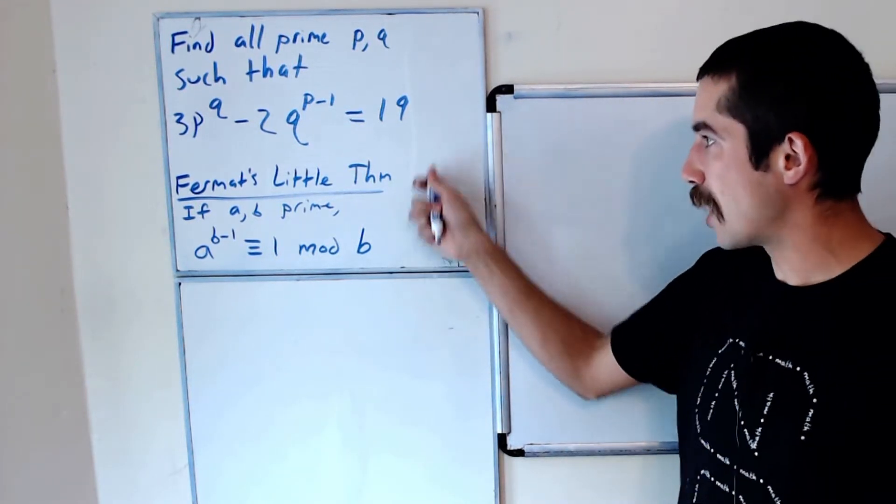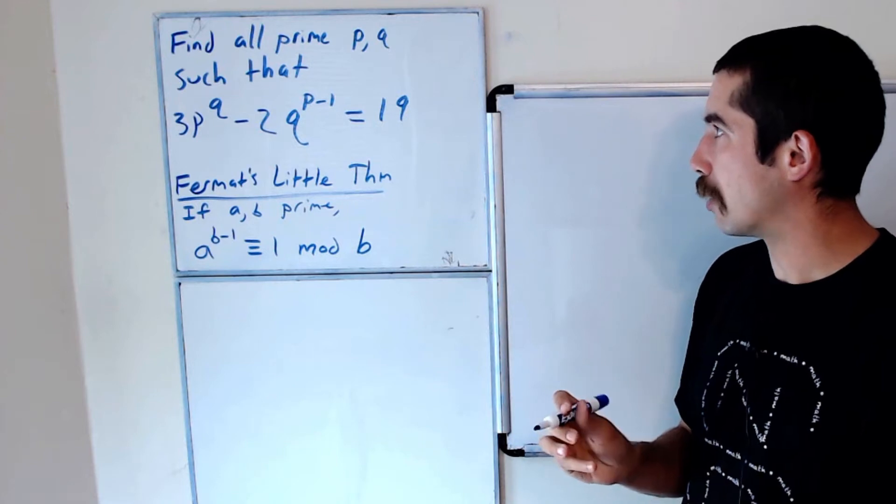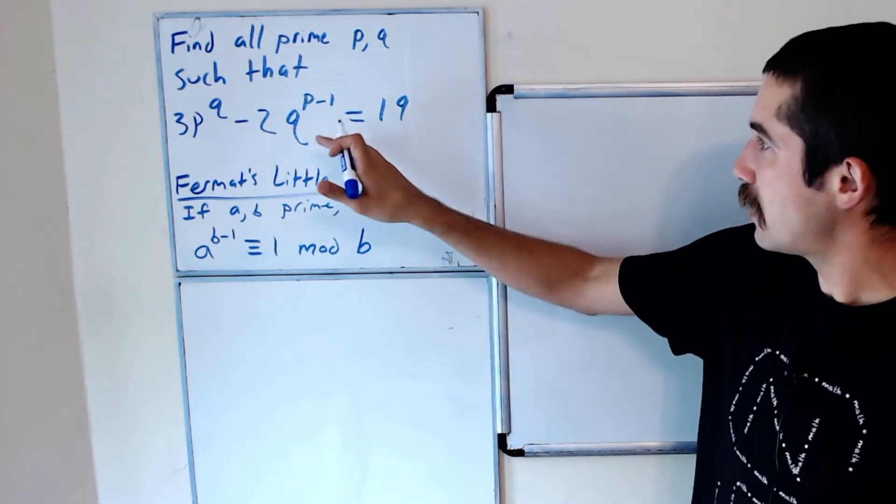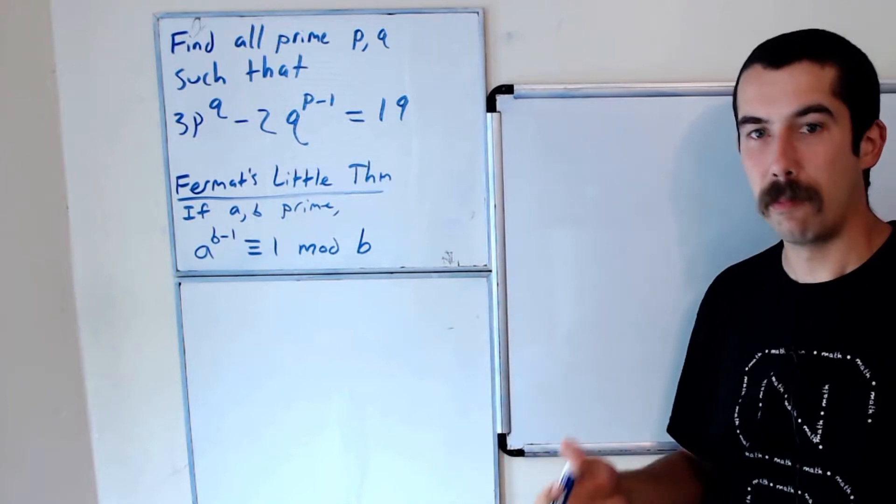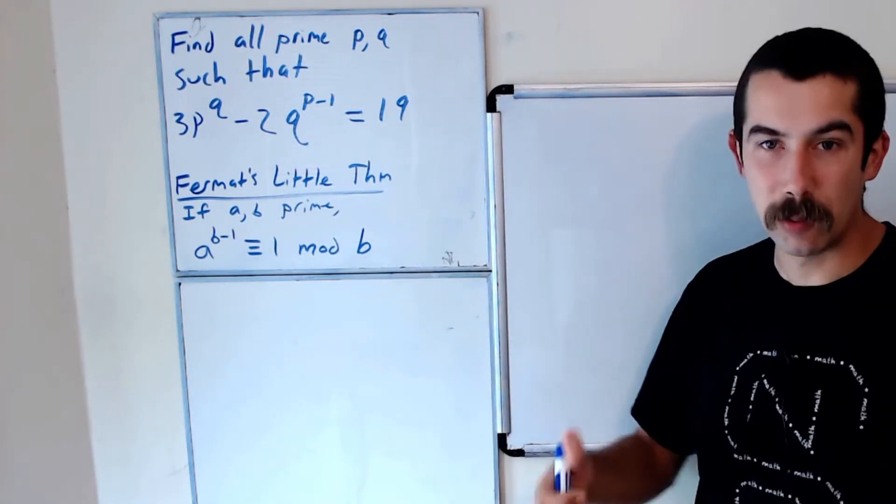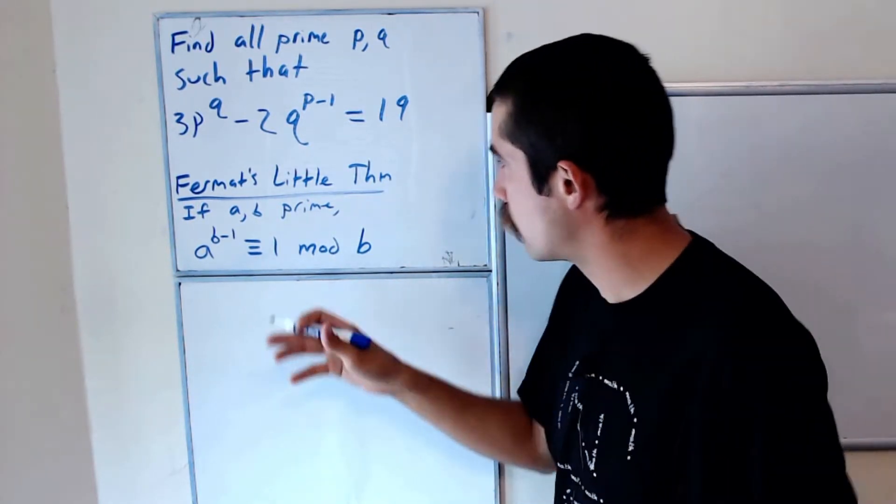Okay, so like I said, we're going to be using Fermat's Little Theorem. And so let's evaluate both sides of this equation mod p and then we'll do it mod q.